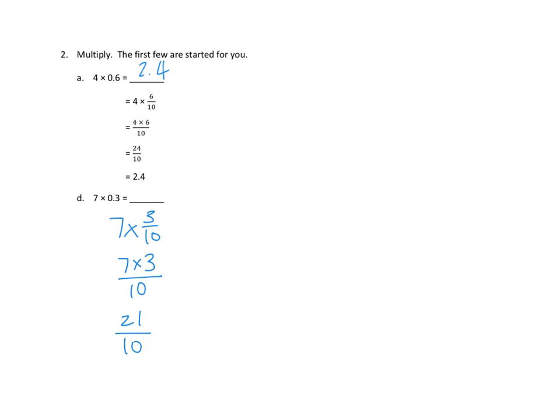Two and one tenth is also the same as 2.1. So no matter which way we want to express it, this way or this way, I think they're wanting us to do it as decimals. Two point one or two and one tenth. Beautiful.